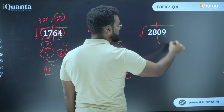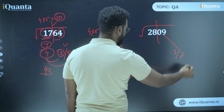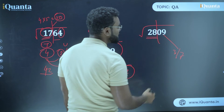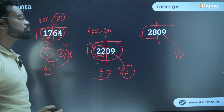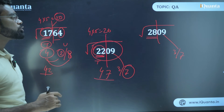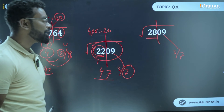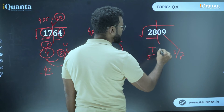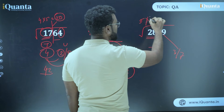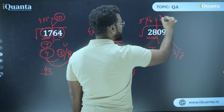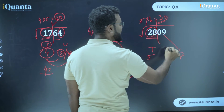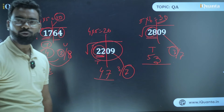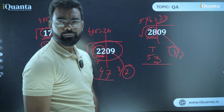Next: √2809. Unit digit is 9, so two possibilities: 3 or 7. For the remaining digits 28, the closest perfect square less than 28 is 25, and the square root of 25 is 5. So the tens digit is 5. Next, 5 × 6 = 30. Since 28 is less than 30, take the smaller unit digit. So the answer is 53.